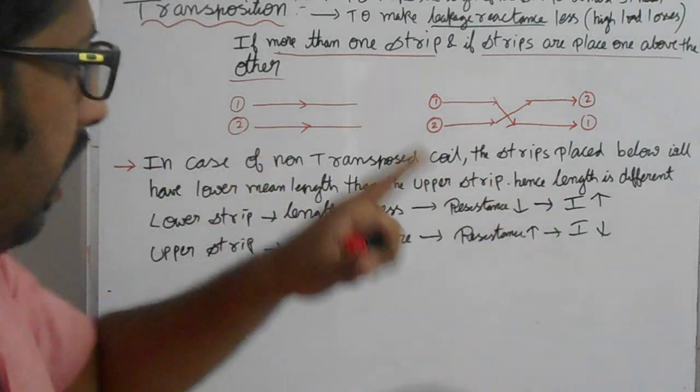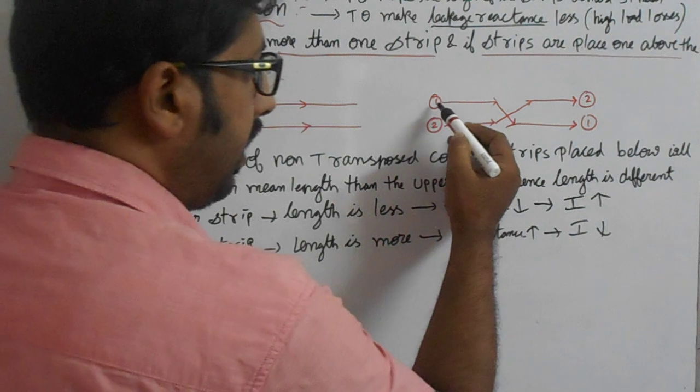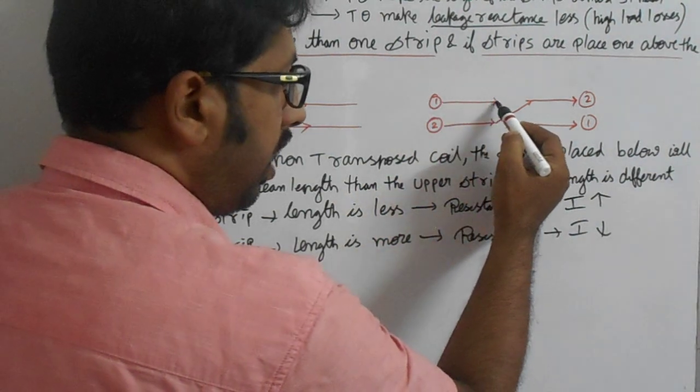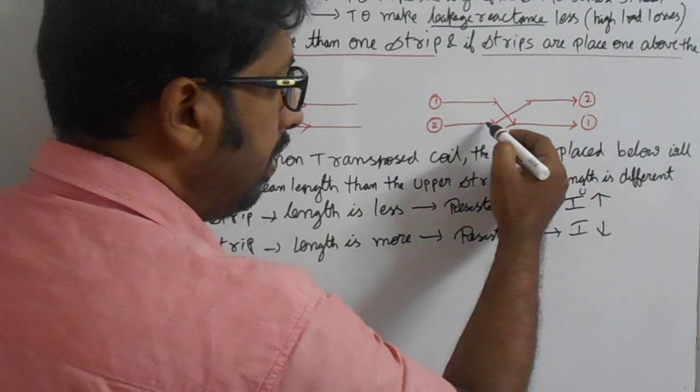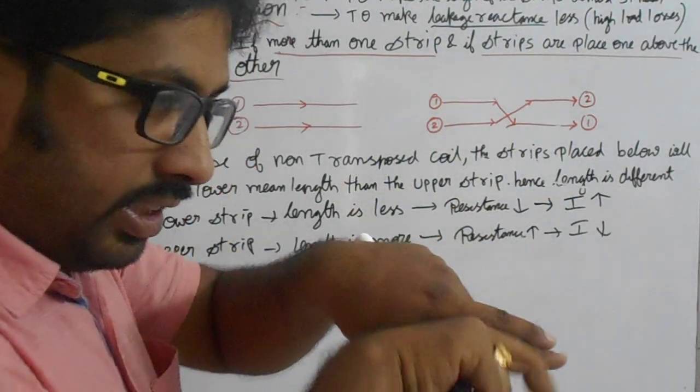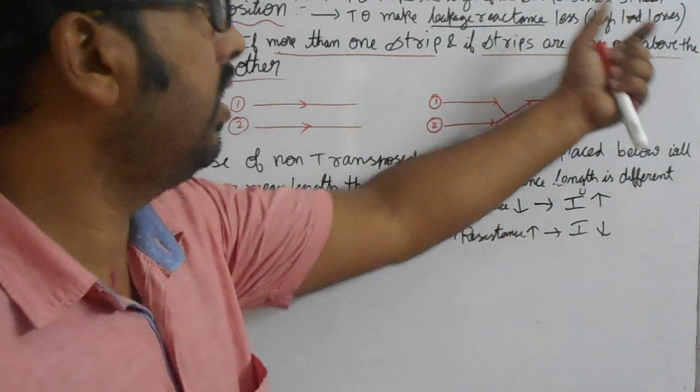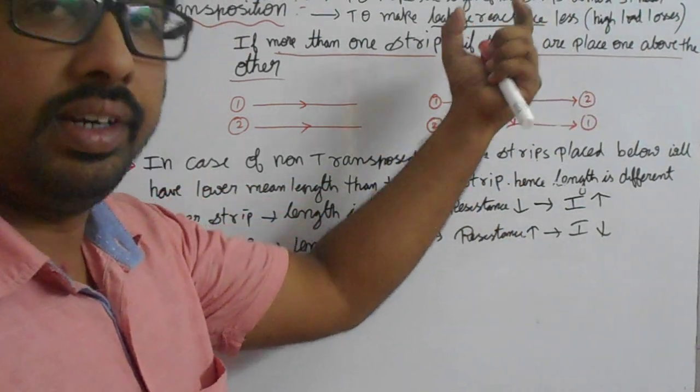If I wind right, this is non-transposed wire, this is transposition wire. As we turn, we are transposing such a way that we are making the mean length up and down and down, we are making the lengths equal so that the load losses and leakage reactance will be decreased.